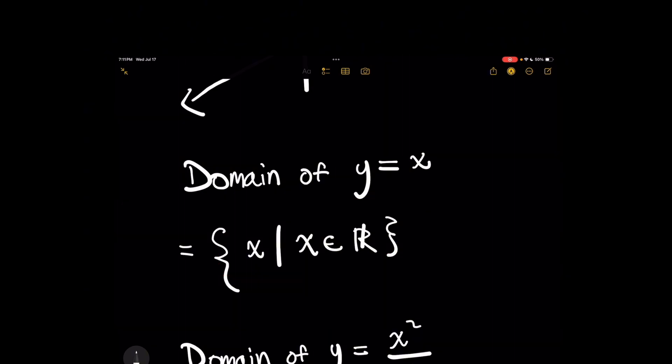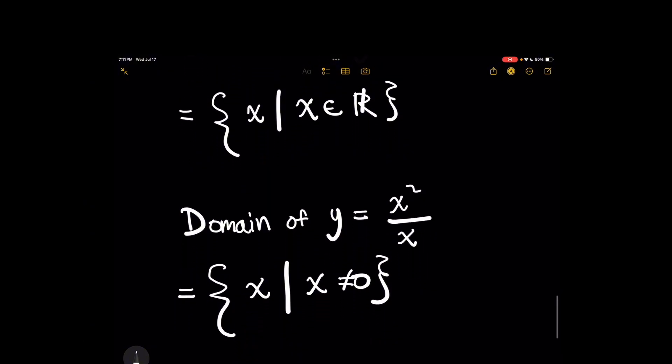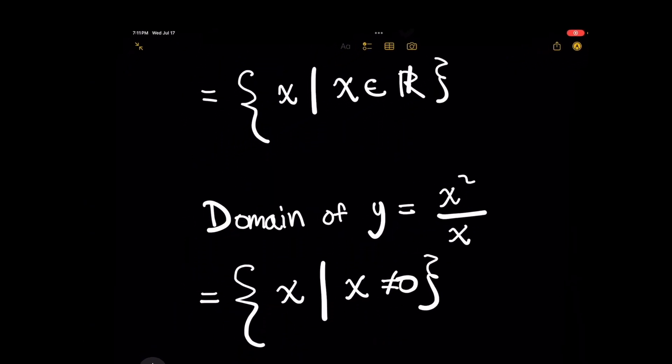You can use negative pi, 5 over 2, 1 million. It doesn't really matter. However, we have to be cautious of the fact that the domain of y equals x squared over x is not the same as the domain of y equals x. Because in this case, we have to exclude x being 0 because division is not allowed.